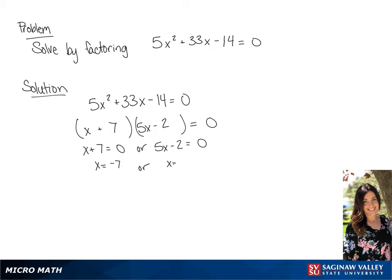So our answer is going to be x is equal to negative 7 or x is equal to 2 over 5.